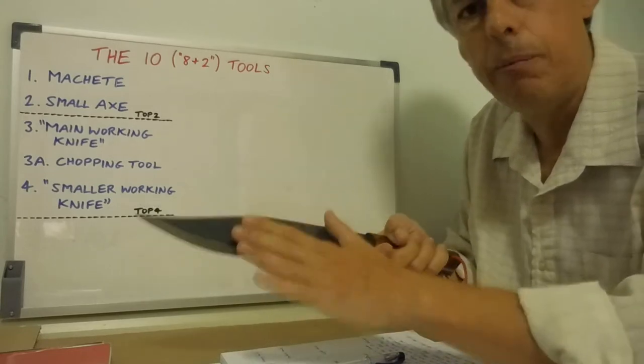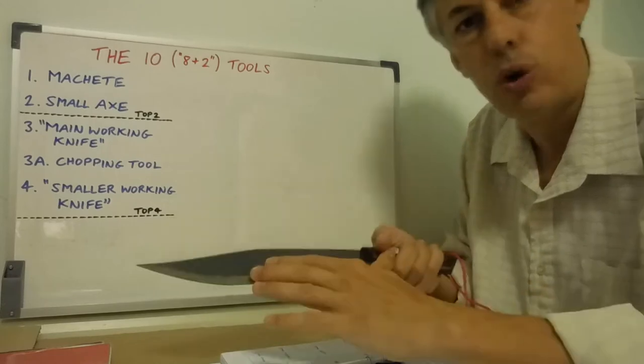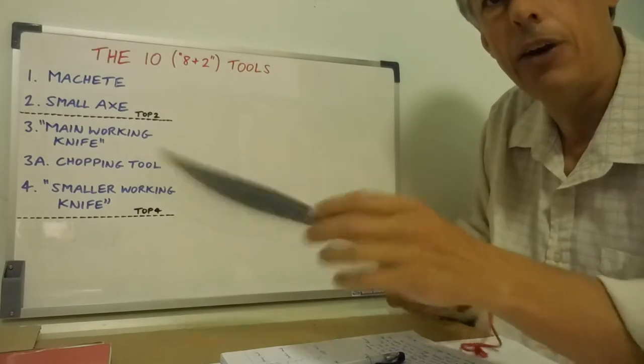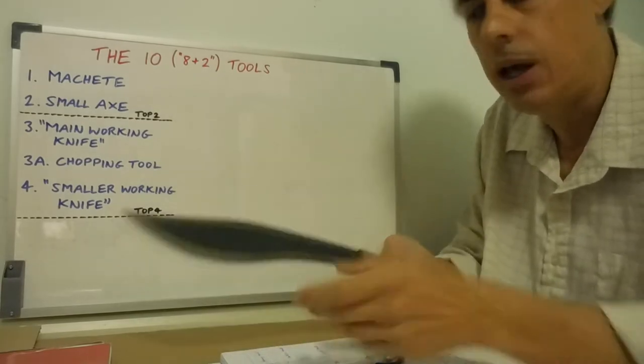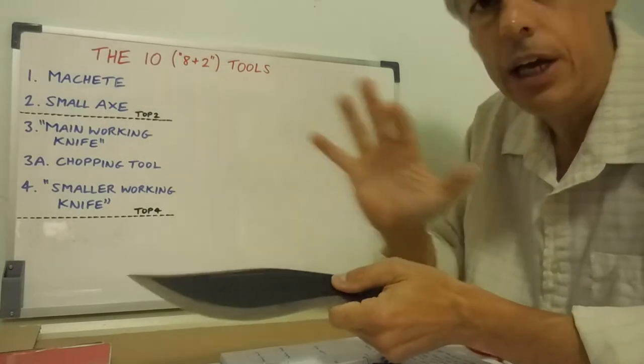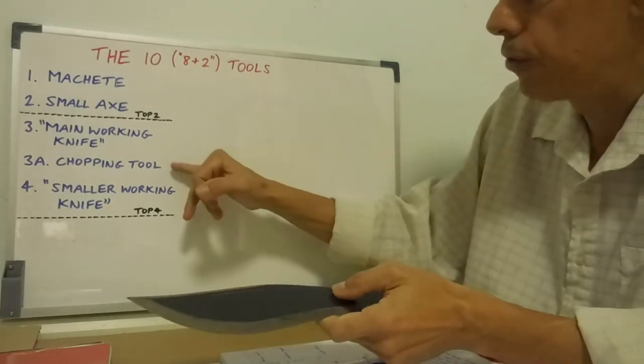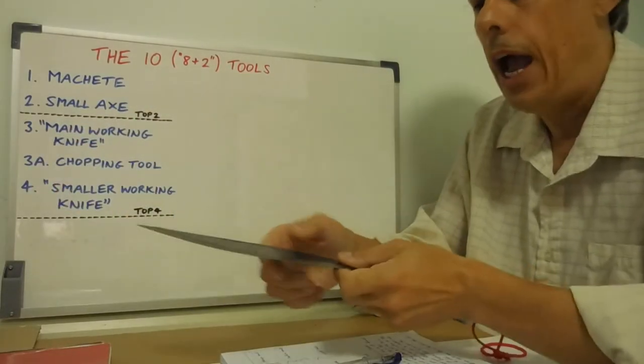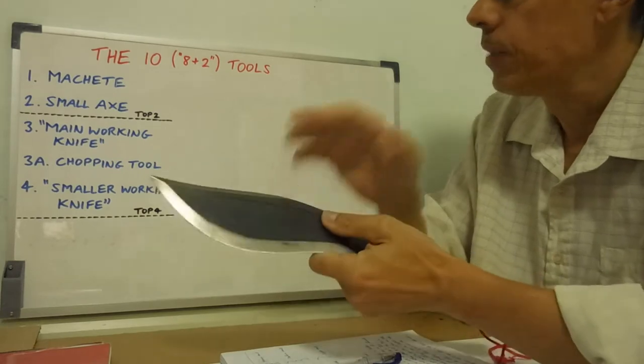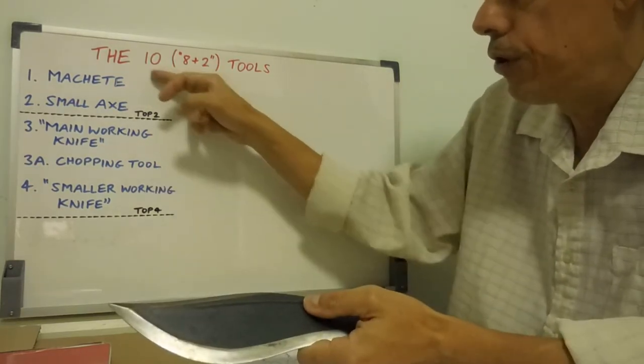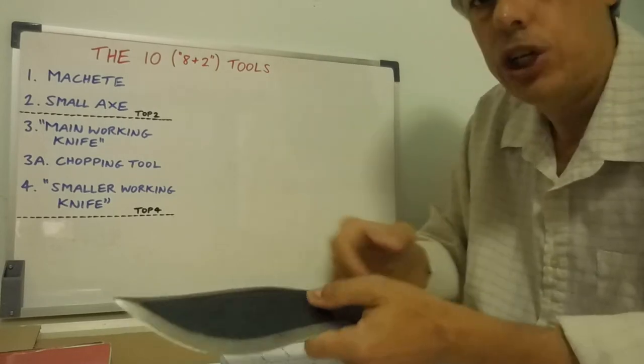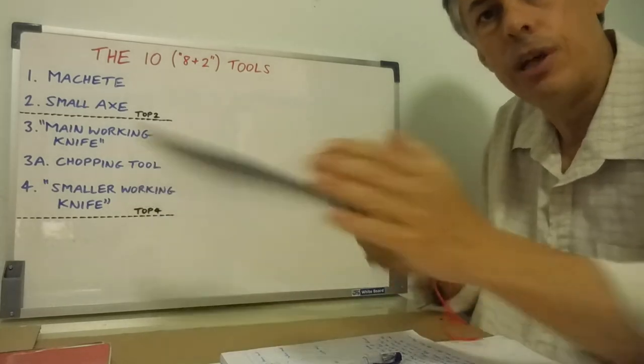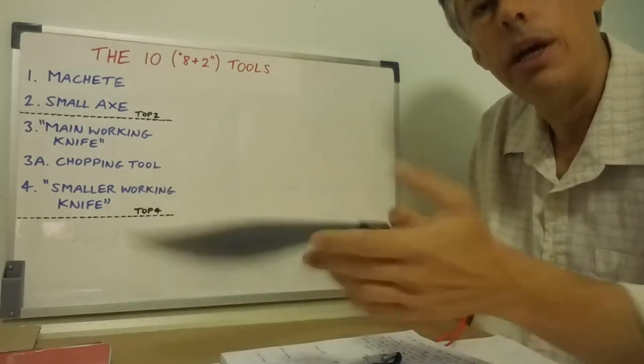But it's going to give you the ability to do some chopping work, perhaps in the short term, in emergency scenarios. If you have to build a shelter or something, you can do some chopping. It gives you some chopping ability. But I don't put that into the machete heavy category. That's why I've created 3A, and it's still part of 3, which is the main working knife. And the reason for this is, if you're not taking one or both of those top two heavy tools, then you really should beef up your main working knife to something like this, where you can do some chopping work, at least for the short term in emergencies.